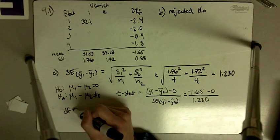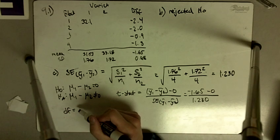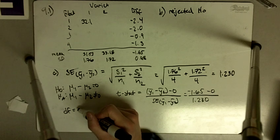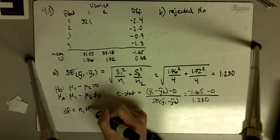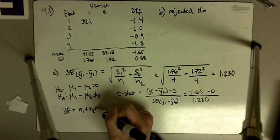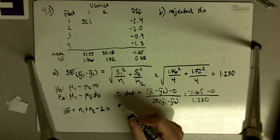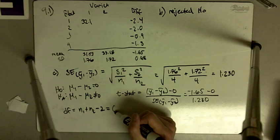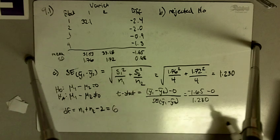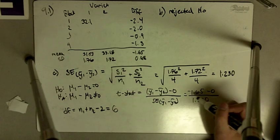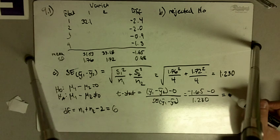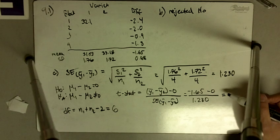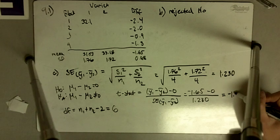Degrees of freedom is N1 plus N2 minus 2, which is 4 plus 4 minus 2, giving us 6 degrees of freedom. And negative 1.65 divided by 1.23 is negative 1.34.